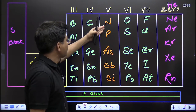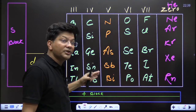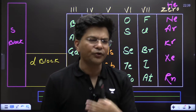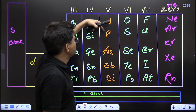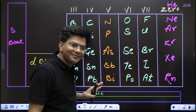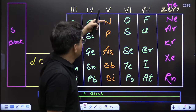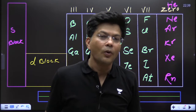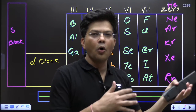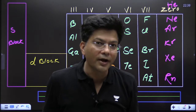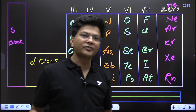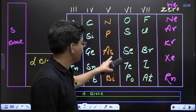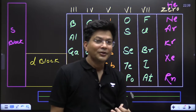Nitrogen, phosphorus, arsenic, antimony, bismuth — they all have five electrons in the outermost orbit. If you can't learn it directly, here is a mnemonic: 'Newspaper is awesome.' Imagine you're reading a newspaper while waiting in a long bank line — 'Newspaper is awesome in SBI.'